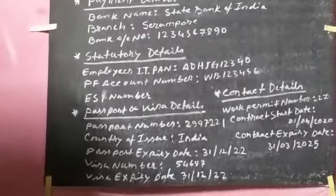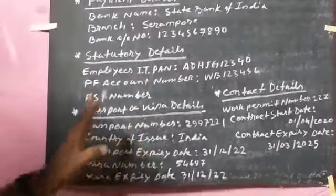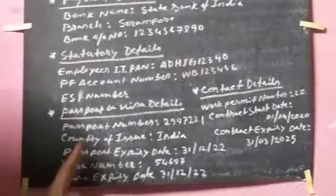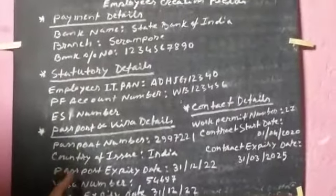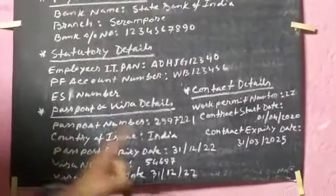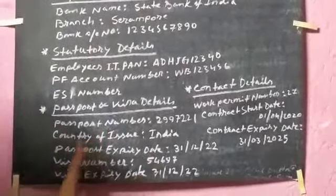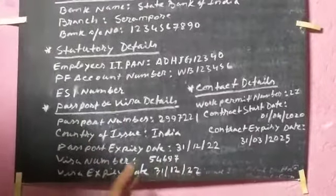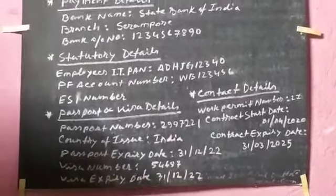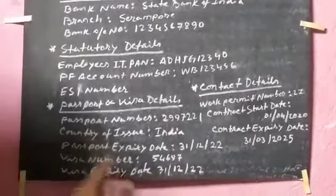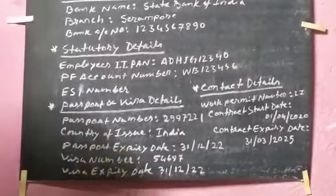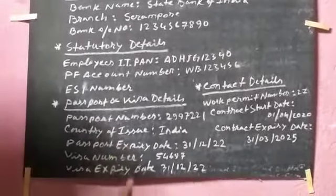The passport number is given, which country is given, the passport expiry will be given, and the visa number will be given.